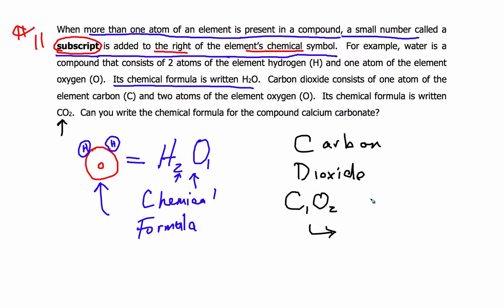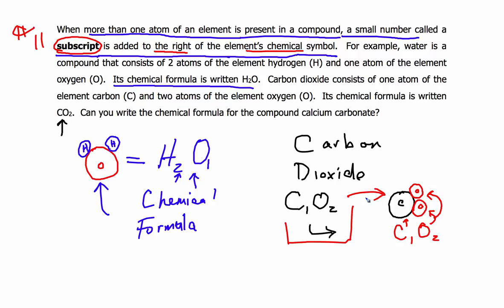Okay, so we're going to have one atom of carbon — there's my carbon. I'll use red for oxygen. I'm going to have two atoms of oxygen, one here and one here, each labeled O. So this is C1 and O2 — one carbon atom and two oxygen atoms. You can see how chemical formulas describe the molecule they represent.